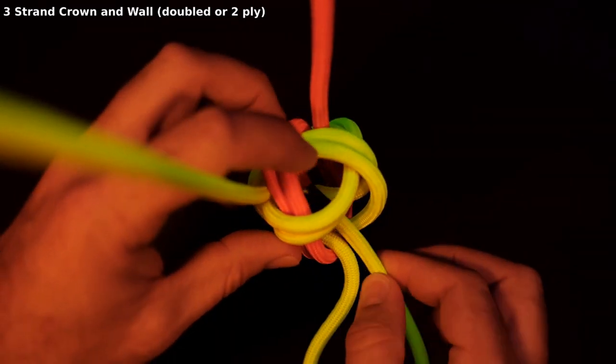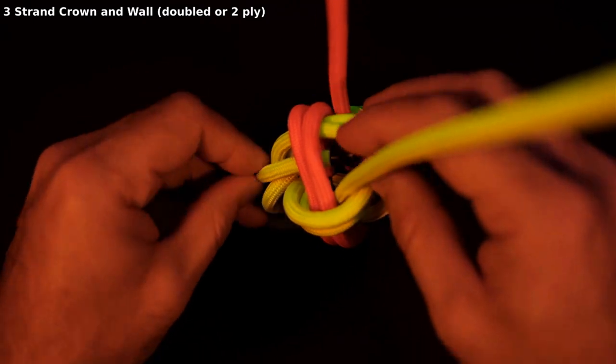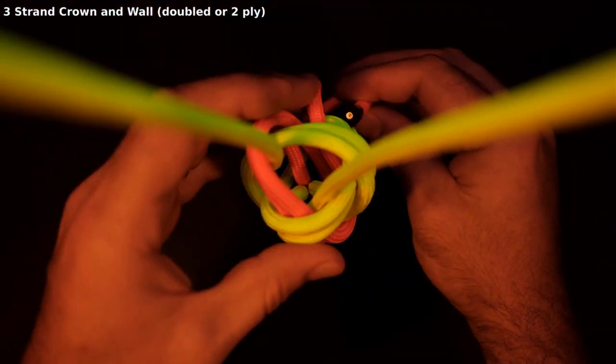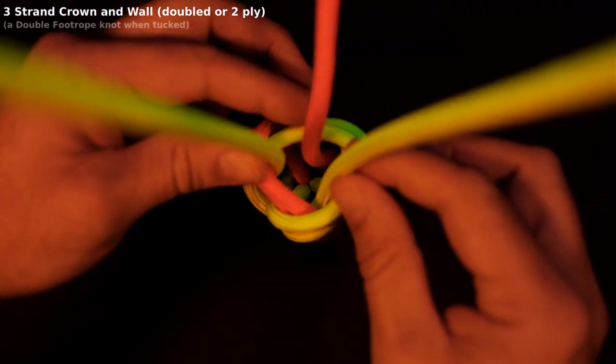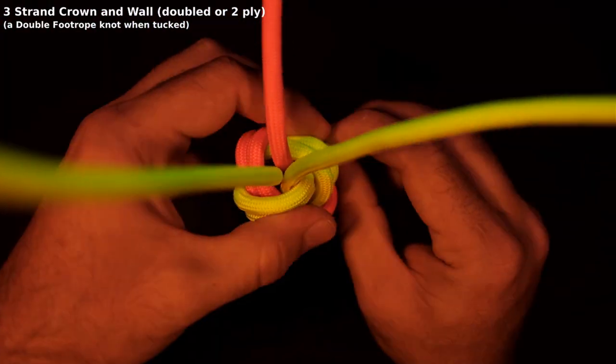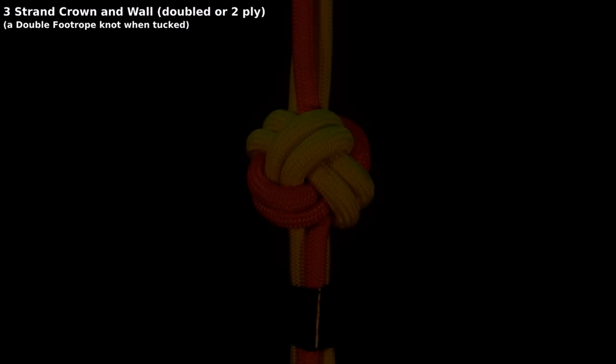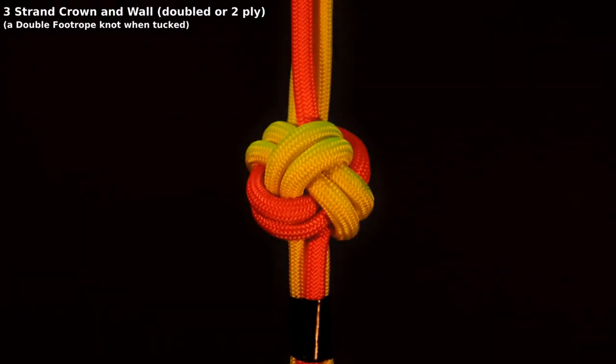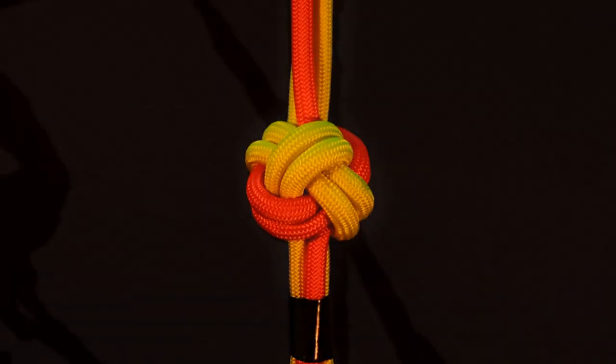To complete the knot, tuck each strand up through the middle. With the strands all tucked, we call this the double foot rope knot, which provided a foothold when working a sail.